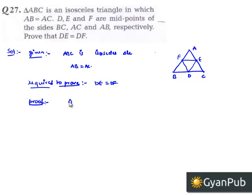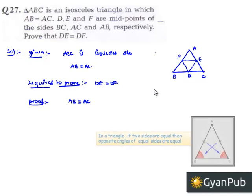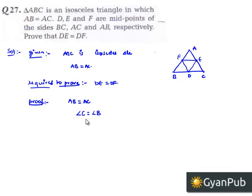It is given that AB equals AC. In a triangle, angles opposite to equal sides are equal. The angle opposite to AB is angle C, and the angle opposite to AC is angle B. Therefore, angle C equals angle B.